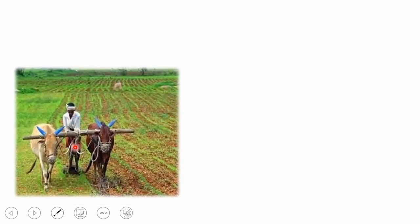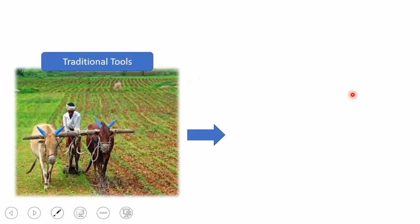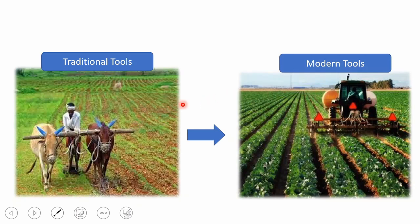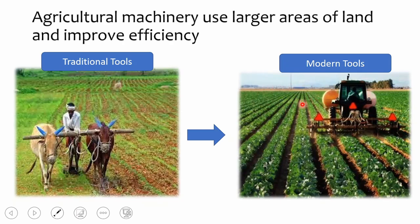This traditional farmer is using traditional tools. Now if you compare it to modern technology tools, this farmer is using modern technology tools. You can see clearly the difference in the crop yield and the large space that can be grown using modern technology tools. Agricultural machines use larger areas of land and improve efficiency, allowing farmers to produce much more crops.